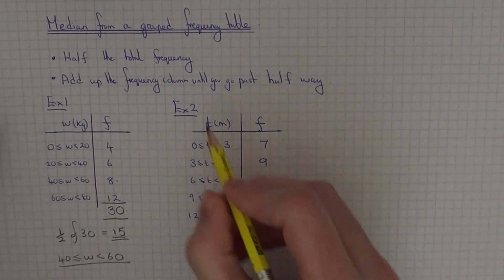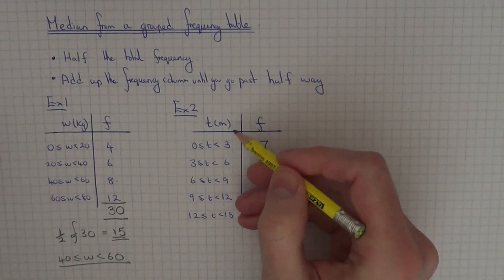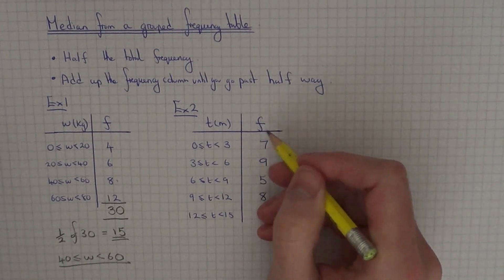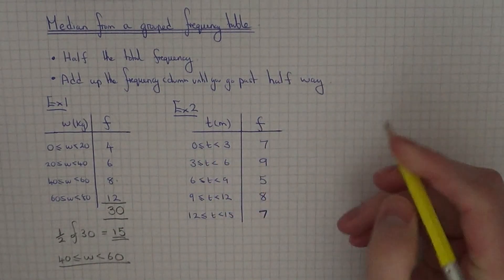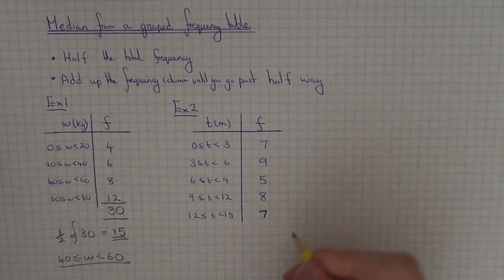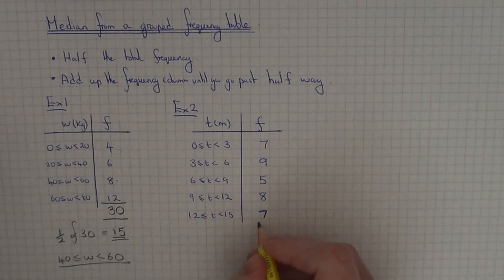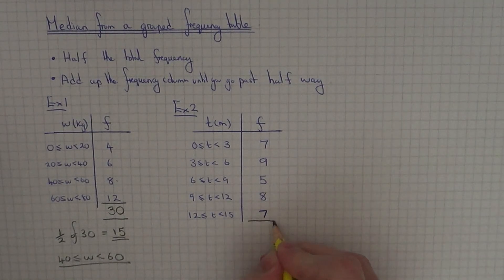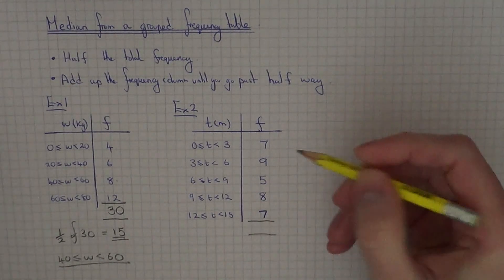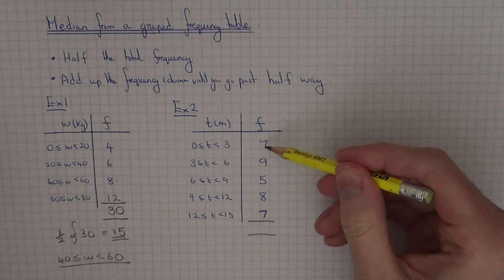Let's look at example two. This time we've got the running times of a group of athletes who took part in a race. Again, the first thing you need to do to find the median class interval is to work out the total frequency and half it. Let's add these up.